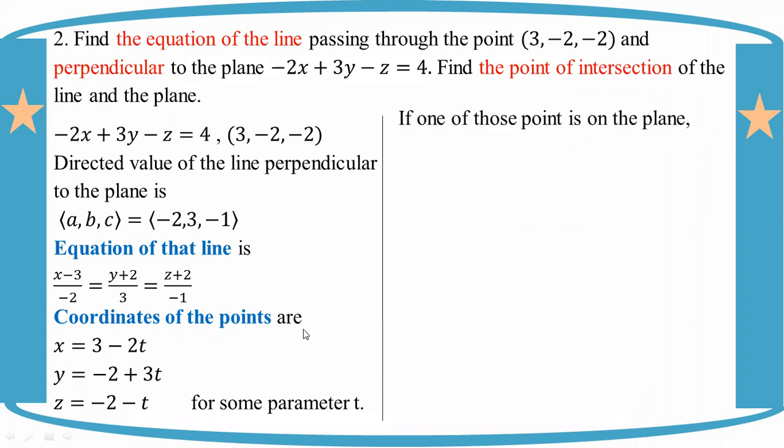The point is on the plane, so we substitute: -2x + 3y - z = 4. Substituting x = 3 - 2t, y = -2 + 3t, z = -2 - t into the plane equation.